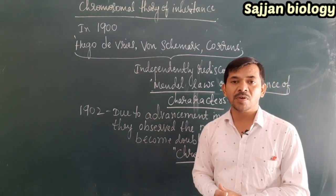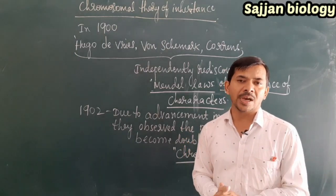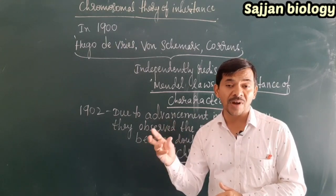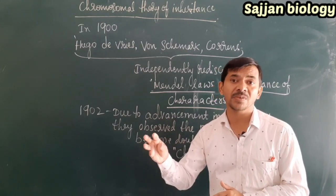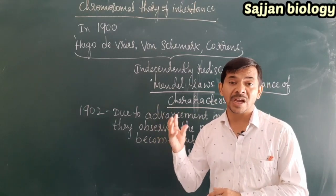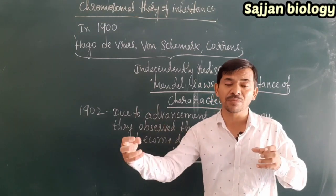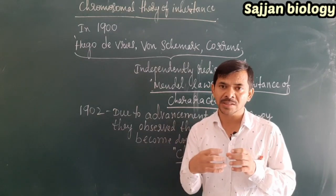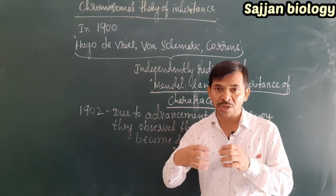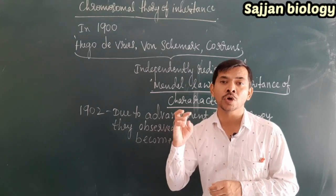At around 1902, scientists observed something inside the cell that was becoming double and dividing. That structure is called a chromosome. They observed very clearly under the microscope how chromosomes double and divide during meiosis, and they gave it the term chromosome.